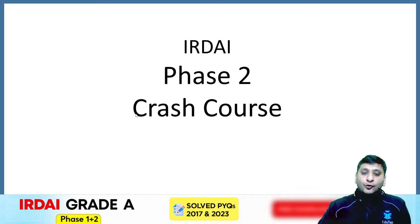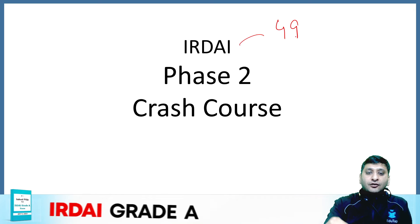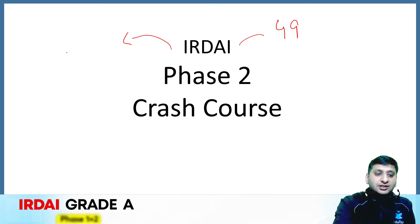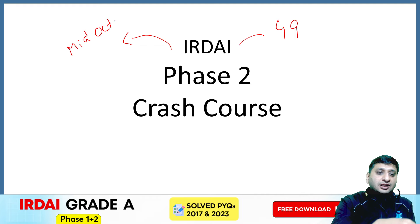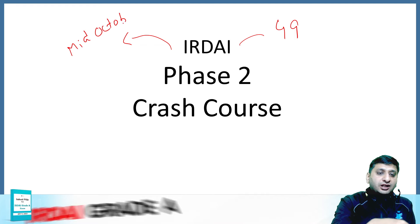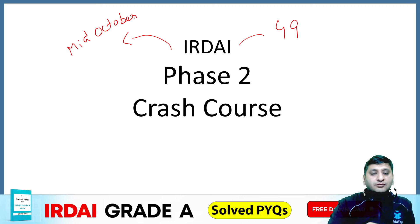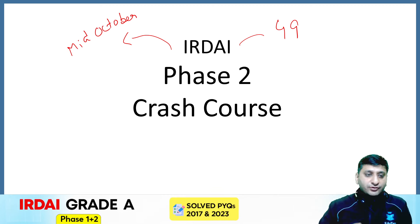We all know that ADI has 49 vacancies. The expected exam date is around mid-October for phase 1, and mid-November for phase 2. The exam dates are not confirmed — these are the expected dates.